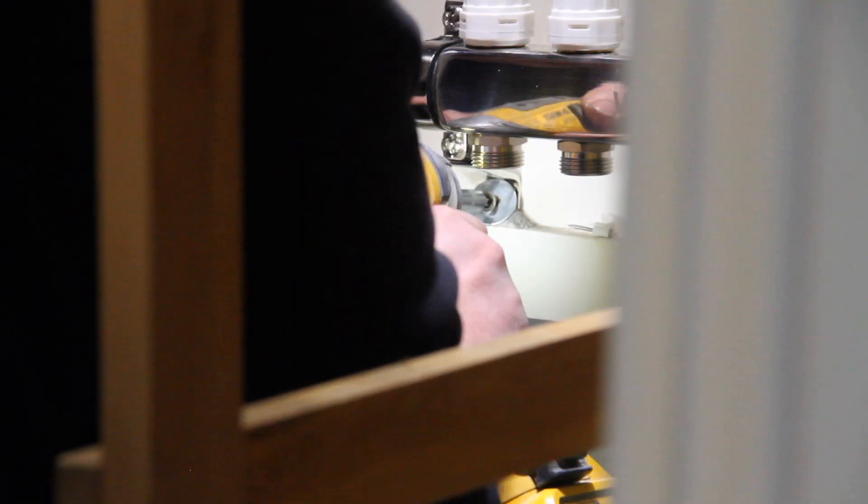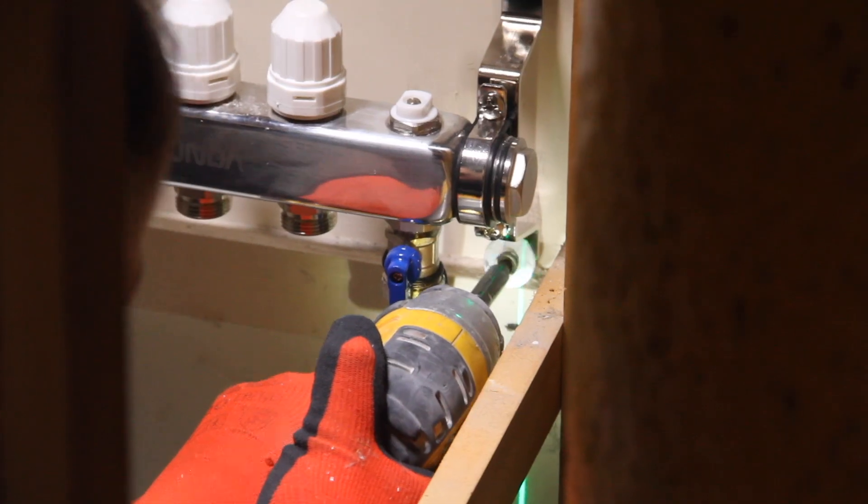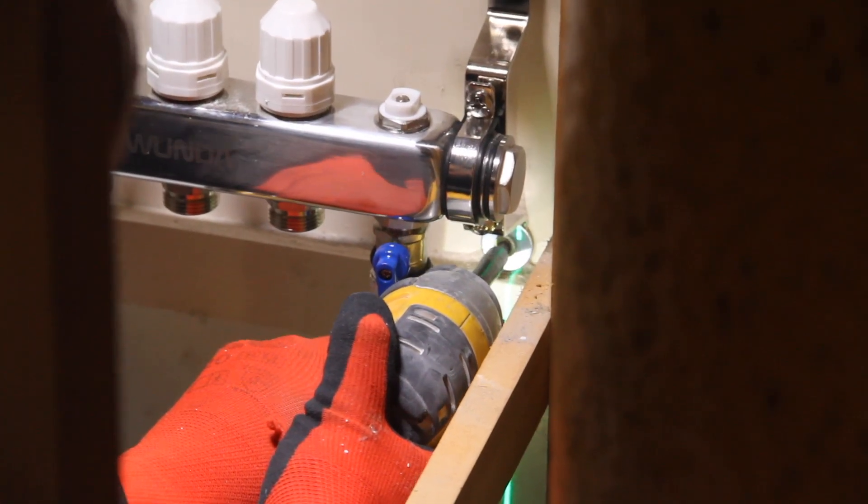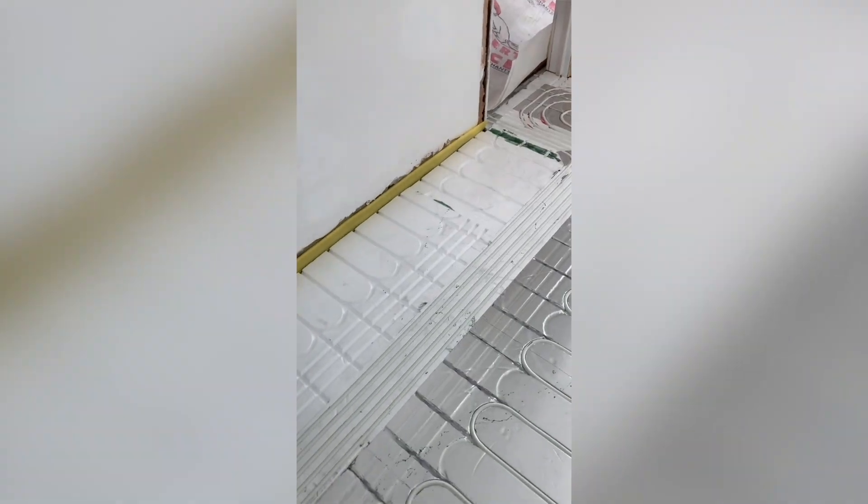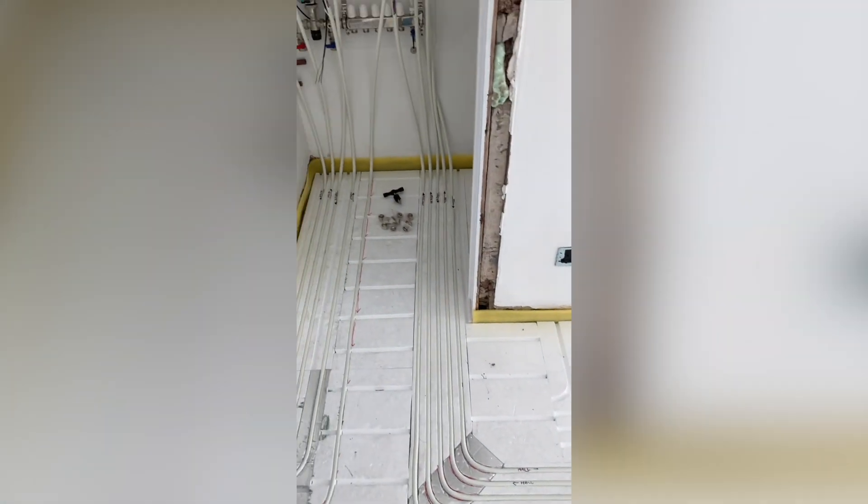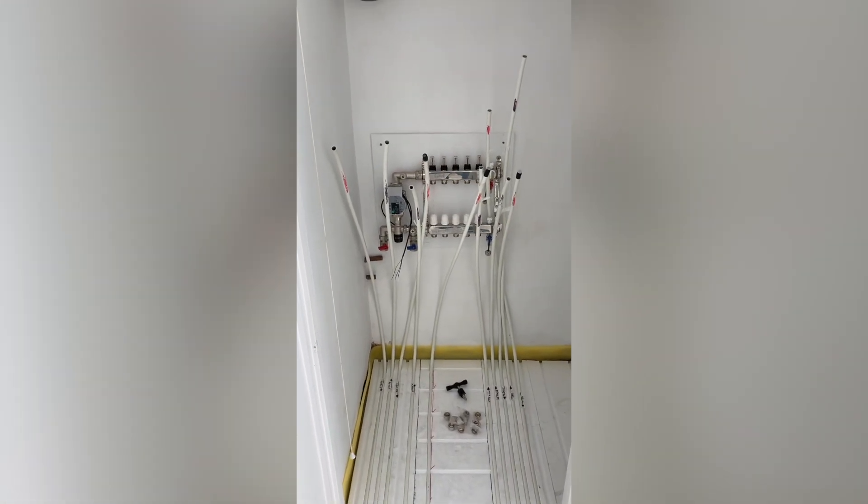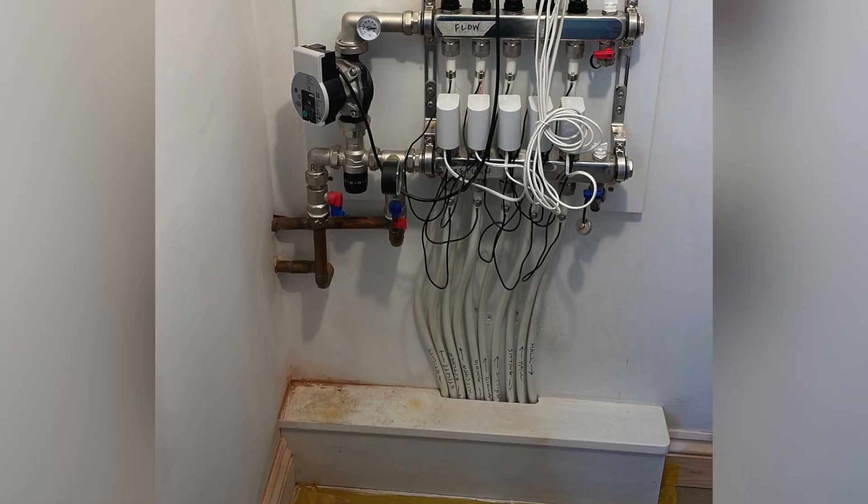The manifold should be mounted to the wall using the appropriate fixings for the wall type and at a minimum of 600mm from the floor to the bottom of the return bar. This will ensure the pipe tail ends can be maneuvered into place and positioned without strain when connecting to the manifold.